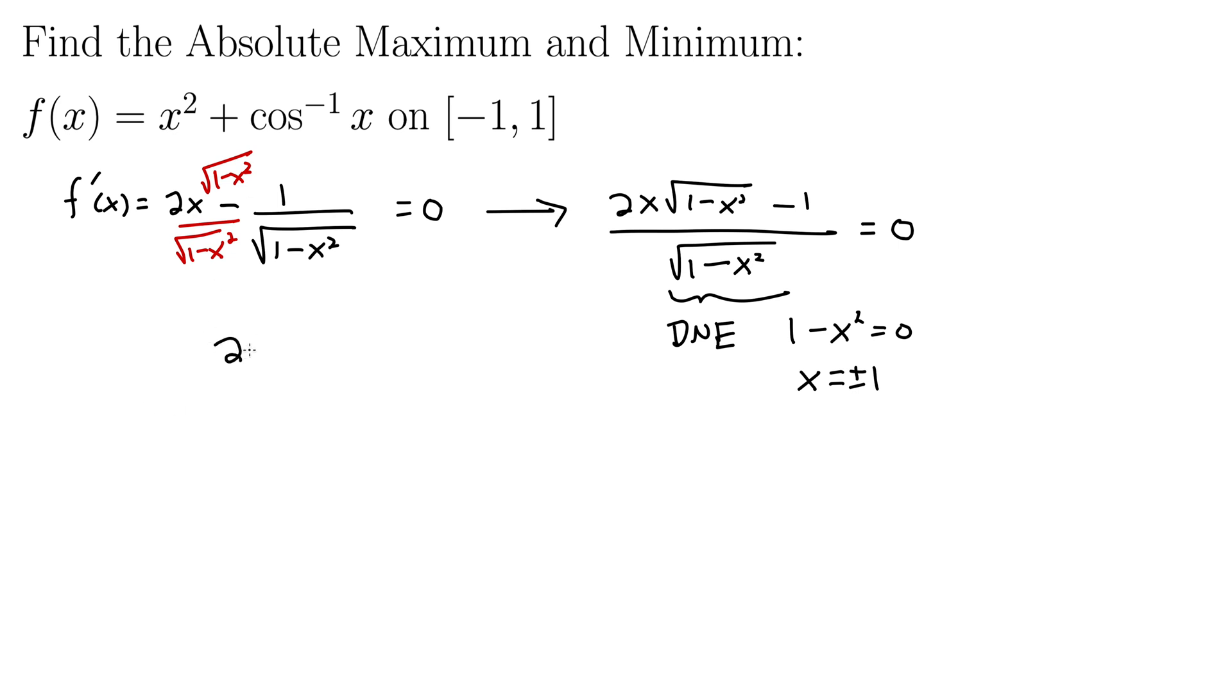Let's look at the numerator. We have 2x square root of one minus x squared minus one equals zero. So I'm just going to add the one to both sides to get equals one. From there, we will square both sides. So we're squaring this thing out on the left and the right. So on the left, that gives us 4x squared times the quantity one minus x squared equals one on the right. Distribute the 4x squared through: 4x squared minus 4x to the fourth equals one.